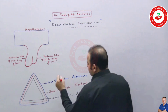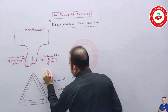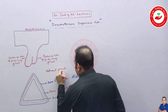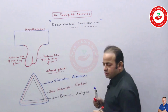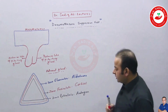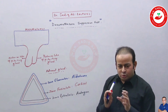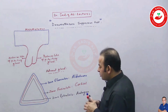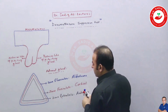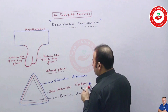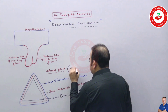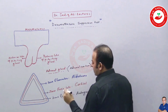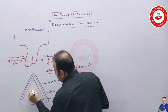I've drawn a gland known as the adrenal gland. This adrenal gland lies above both kidneys, which is why it is also referred to as the suprarenal gland. This gland has two parts: the outer part is called the adrenal cortex, and the inner part is called the adrenal medulla.